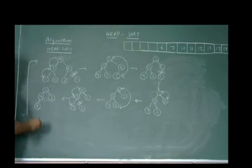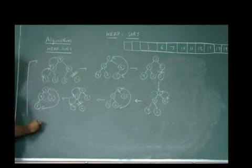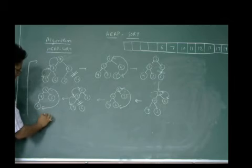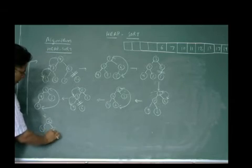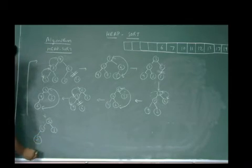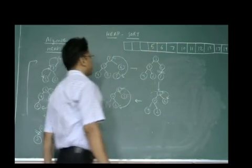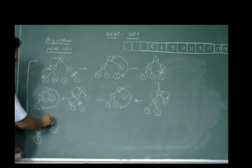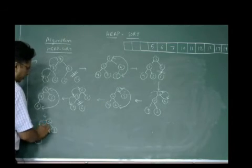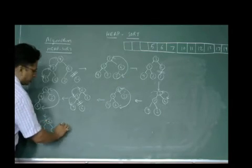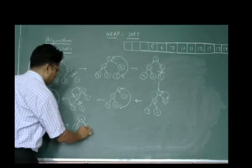After this we repeat the procedure: swap the root node with the last node. After swapping: 2, 4, 3 and 5. The 5 is removed and placed in the sorted array. We run heapify at root node: 4 is greater than 2 and greater than 3, so the heap becomes: 4, 2, 3.